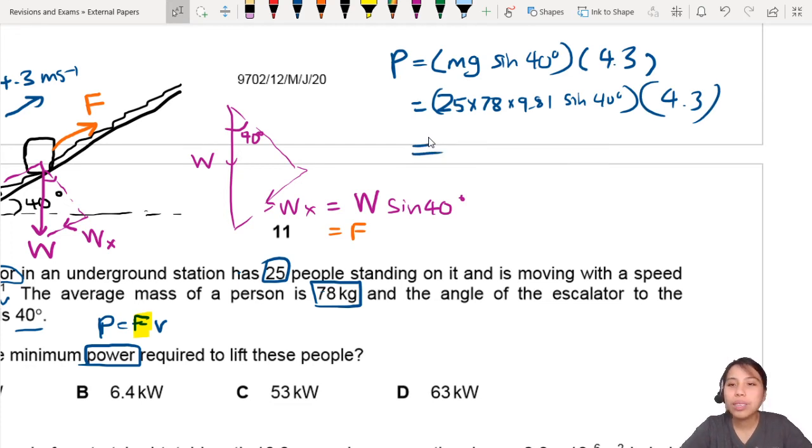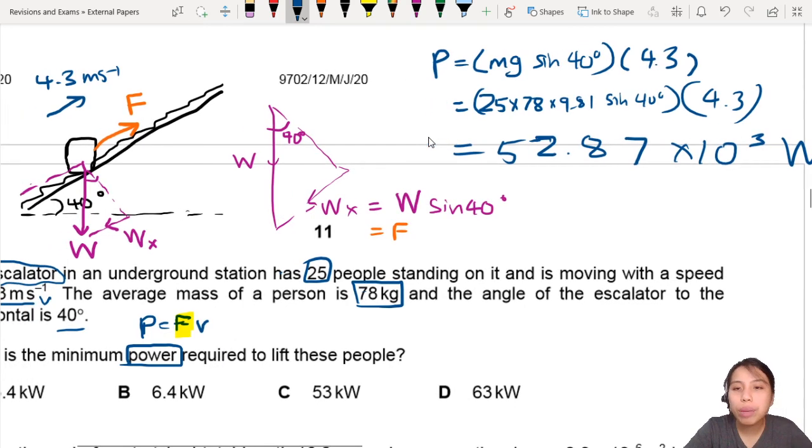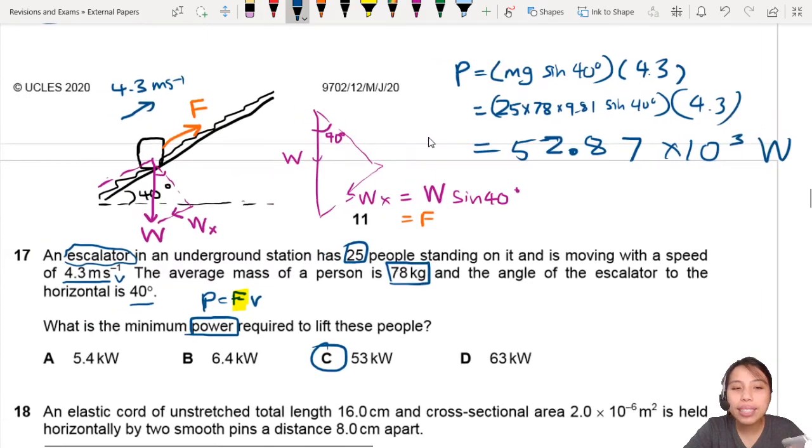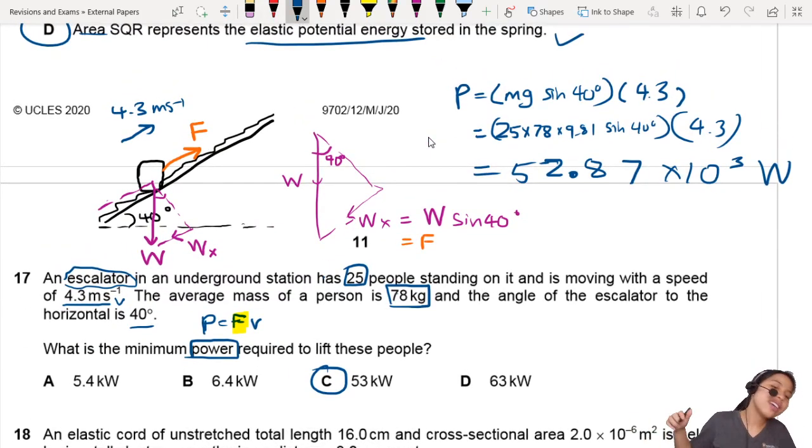In total, my calculator will give me about 5. Oh, this is such a weird number. Give me a second. 52.87 times 10 to the power of 3. Power, right? Watts. So, let's look for something close to 52.8 or 52.9. Closer to 53. So, this whole escalator system, engine and all, will have to exert a power of 52.8 kilowatts. By the way, 10 to the power of 3 is kilo. So, this is 53 kilowatts.